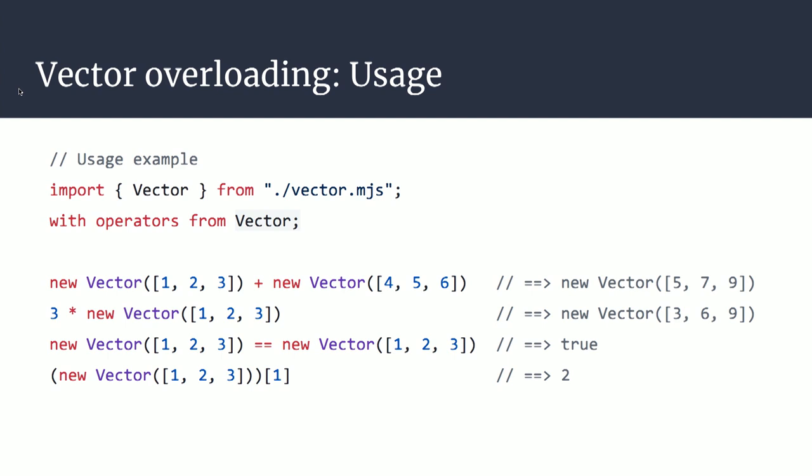So, operator overloading. Operators like plus in JavaScript just have a particular meaning — for numbers they add numbers, for strings they concatenate strings, and we decided for BigInt they would add BigInts. But you could imagine other cases, like in Python where NumPy is very popular and has vectors and matrices.